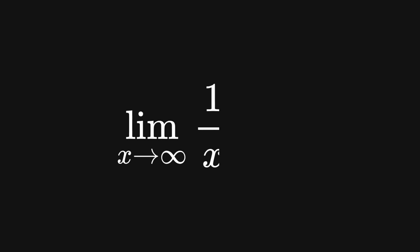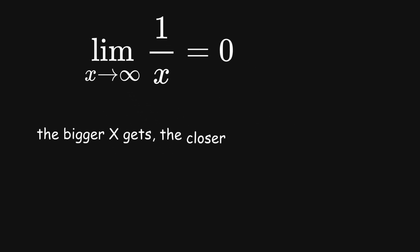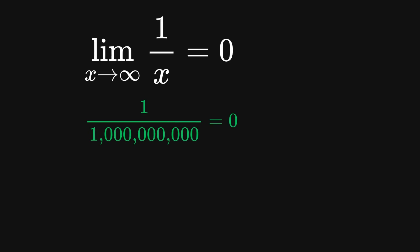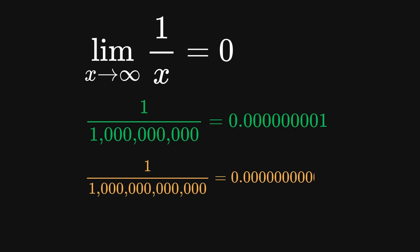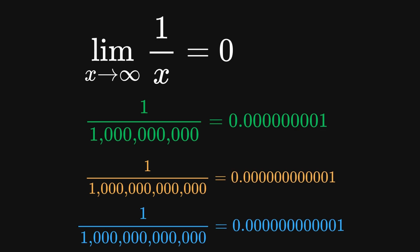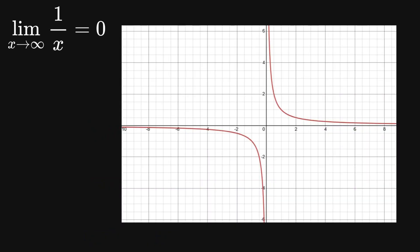Now consider this: the limit as x approaches infinity of 1 over x equals 0. This simply means that the bigger x gets, the closer 1 over x gets to 0. Think about it practically: 1 divided by 1 billion is incredibly tiny, almost 0. 1 divided by 1 trillion? Even tinier. As you keep making that denominator larger and larger, you're essentially shrinking the result closer and closer to 0.